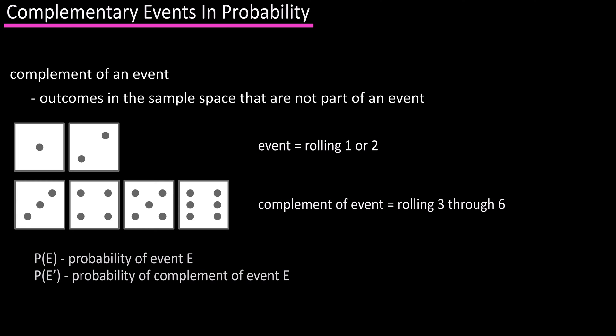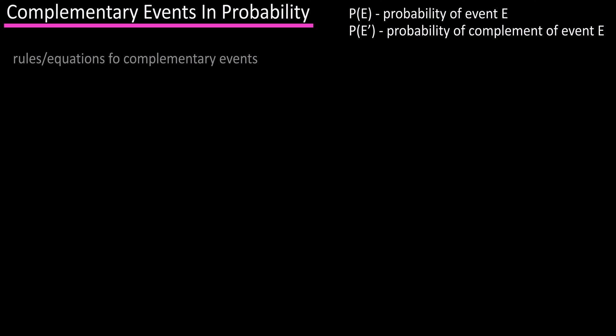Our event is written as P of E, probability of event E, and the complement of an event is written as P of E prime, with this little apostrophe here, and there are a few rules or equations that go with complementary events.